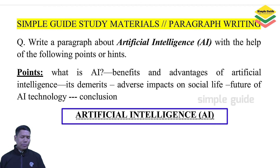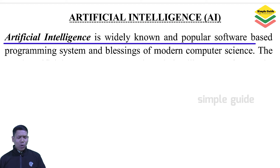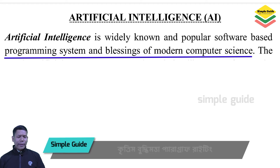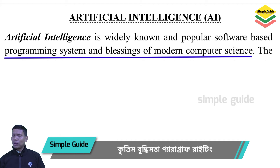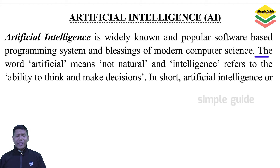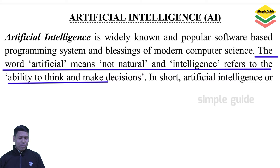Artificial intelligence, AI, is a widely known and popular software-based programming system and a blessing of modern computer science. The word 'artificial' means not natural, and 'intelligence' refers to the ability to think and make decisions.